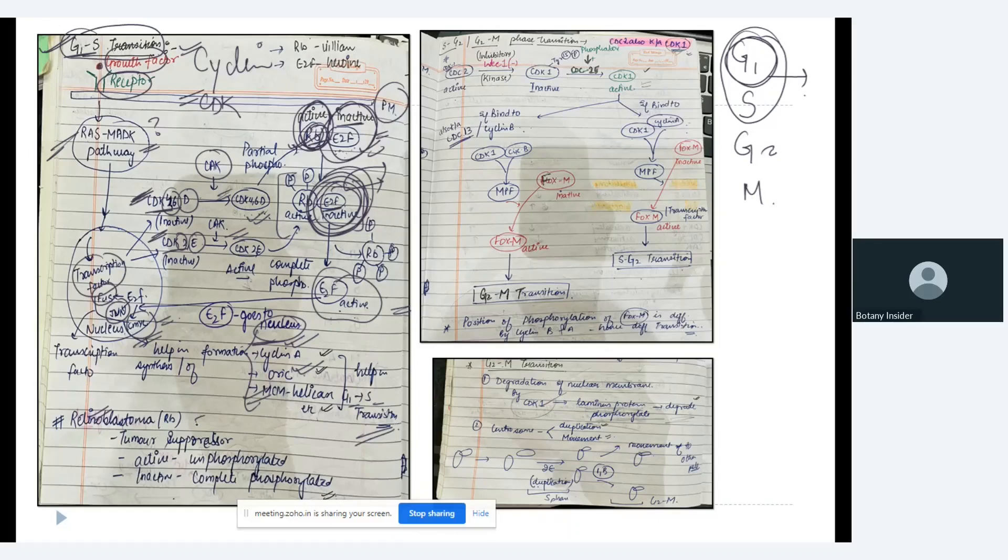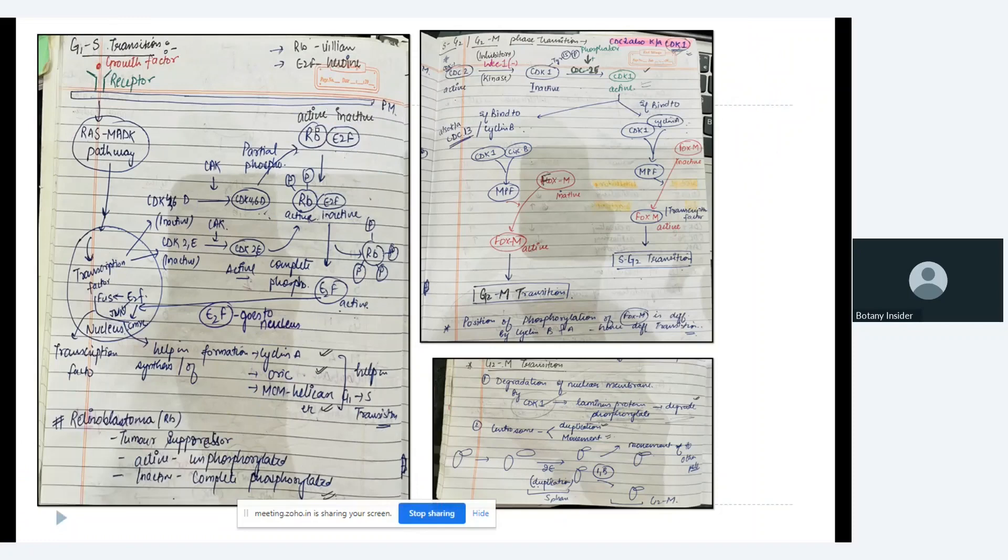Now what is retinoblastoma? So retinoblastoma is a tumor suppressor. It is active when unphosphorylated. If you remember, we have just discussed that RB when it is active, it is not phosphorylated or active in case of unphosphorylated situation. It becomes inactive when it is completely phosphorylated. Initially, CDK4/6 and cyclin D works. They partially phosphorylate the retinoblastoma. And after that, CDK2 and cyclin E, they come and completely phosphorylate the retinoblastoma. You have to remember which cyclin does partial phosphorylation and which does complete.